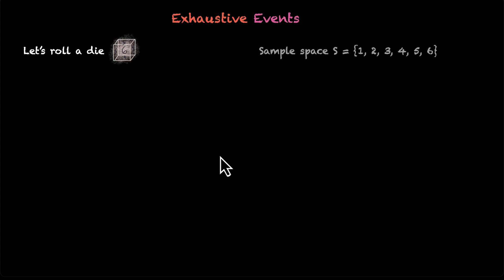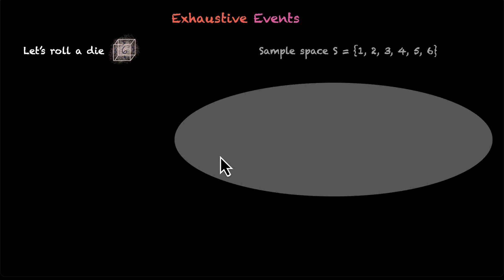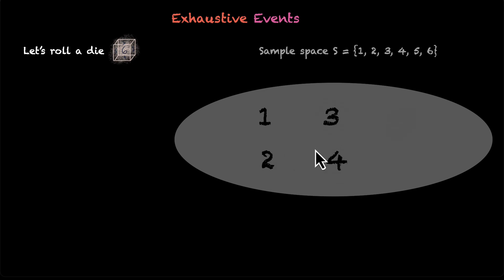Let's put the sample space down. This is our sample space and these are our sample points: 1, 2, 3, 4, 5, and 6.